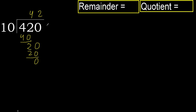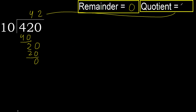Next — that is not a number, therefore finish. 420 divided by 10 is 42.